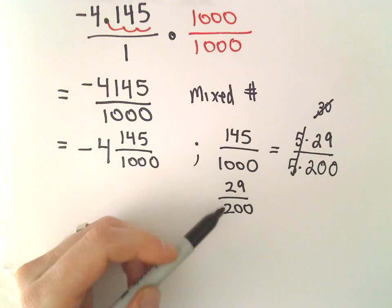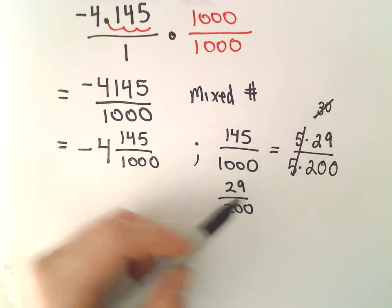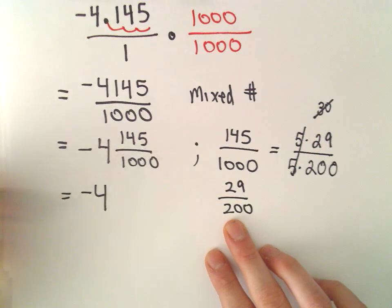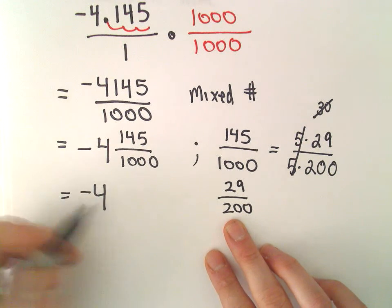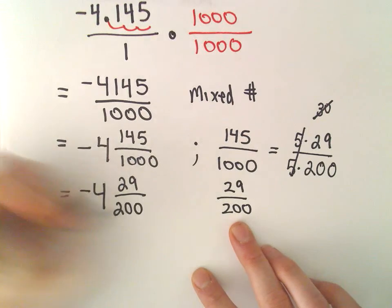Now you can maybe think about factors. Let's see, anything in common that will reduce. Well, 29 is a prime number. So this will be a reduced fraction. We can write our final mixed number as negative 4 and 29 over 200.